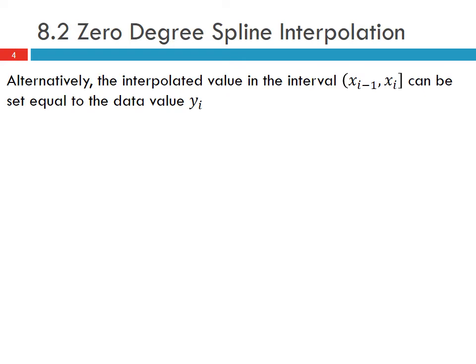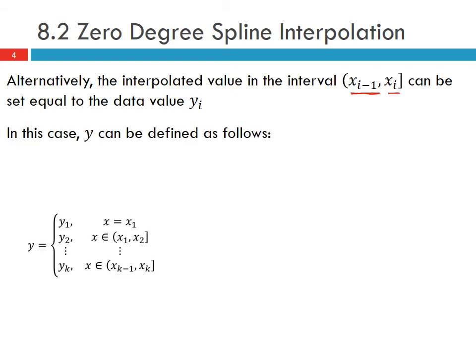Alternatively, the interpolated value in the interval with the open side at x i minus 1 and the closed side at x i can be set equal to the data value y i, so in this case our function would be defined as shown here.